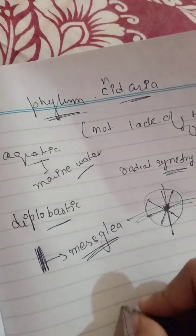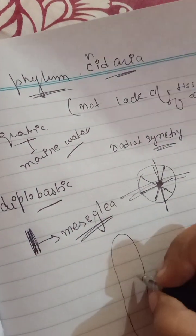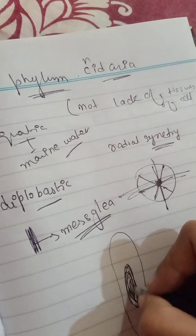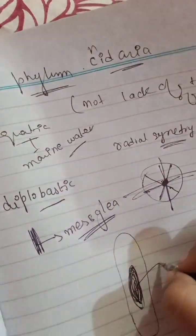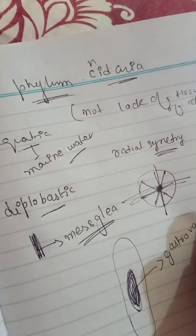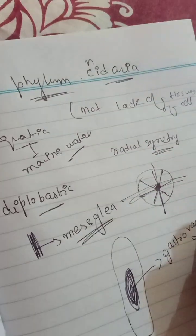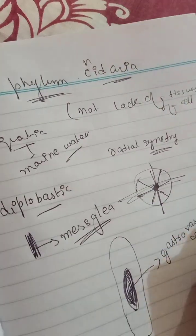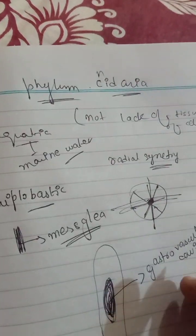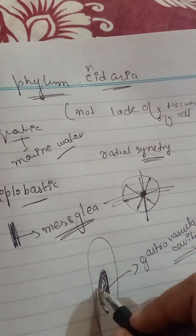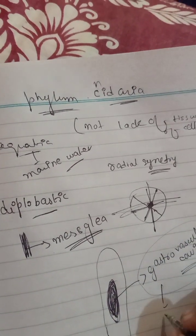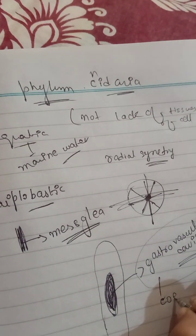If we talk about their internal cavity — where all processes occur — we call that the gastro-vascular cavity. This means they have only one opening, which is the mouth. They excrete from the mouth and they ingest from the mouth. This cavity is also called the coelenteron, and that is why they are also named Coelenterata.